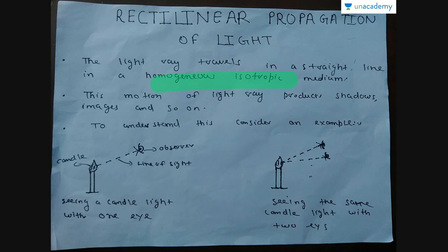If the medium is not homogeneous or isotropic, the light will eventually bend and will not travel in a straight line. Light will also not travel in a straight line when it encounters an object that is comparable to its wavelength — it will bend due to that smaller object. This phenomenon is known as diffraction, and we will discuss it in optical interference, not here.